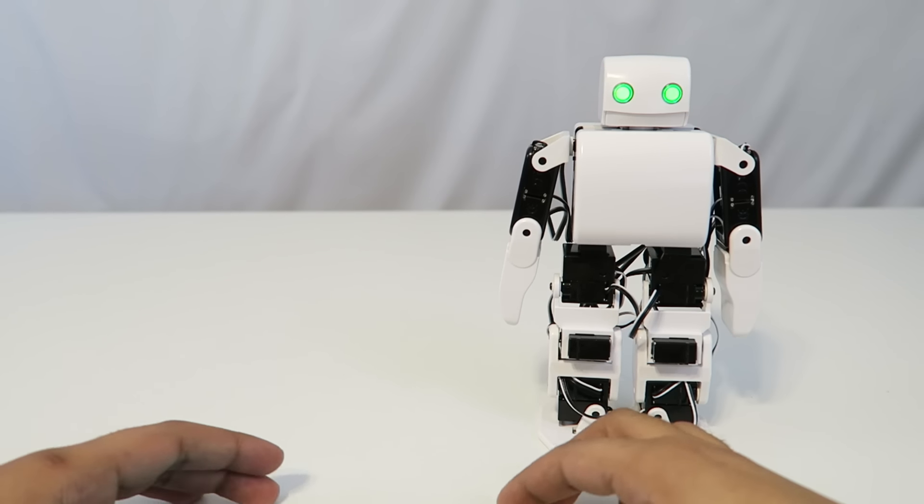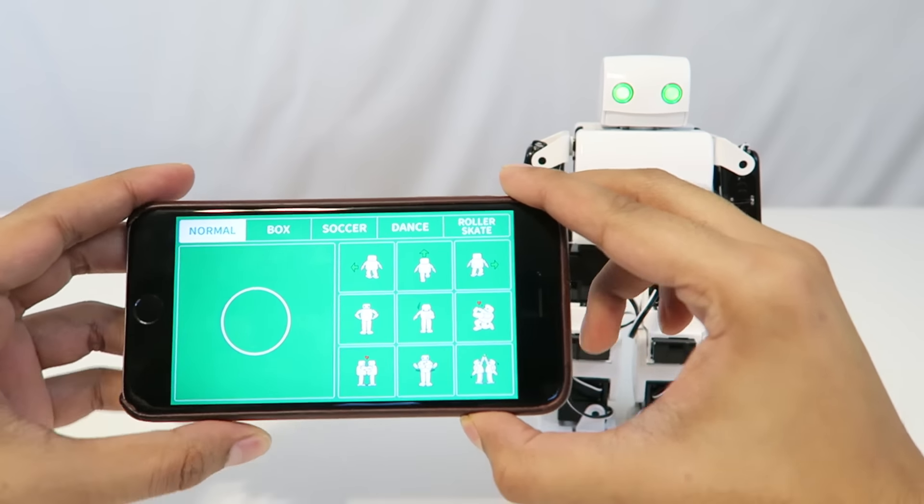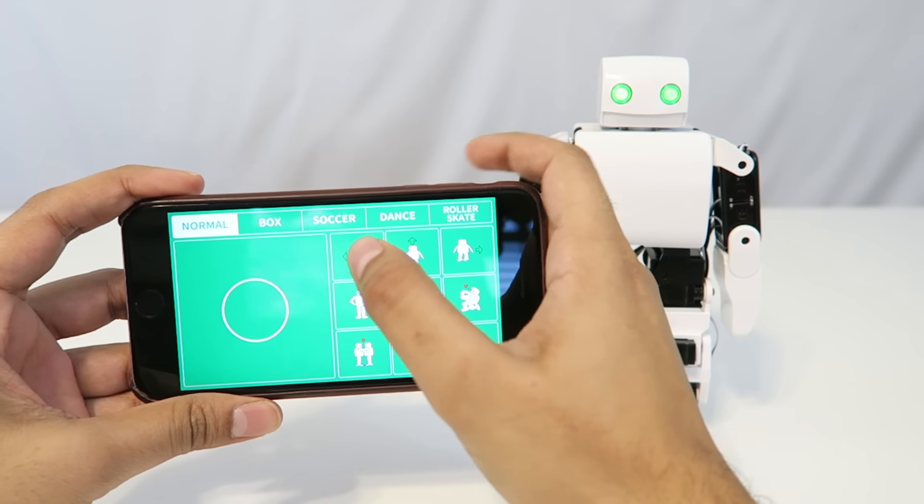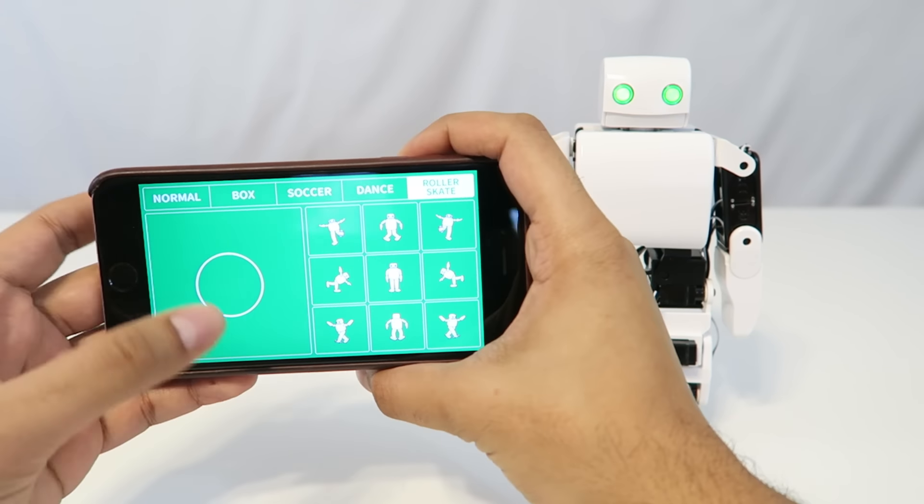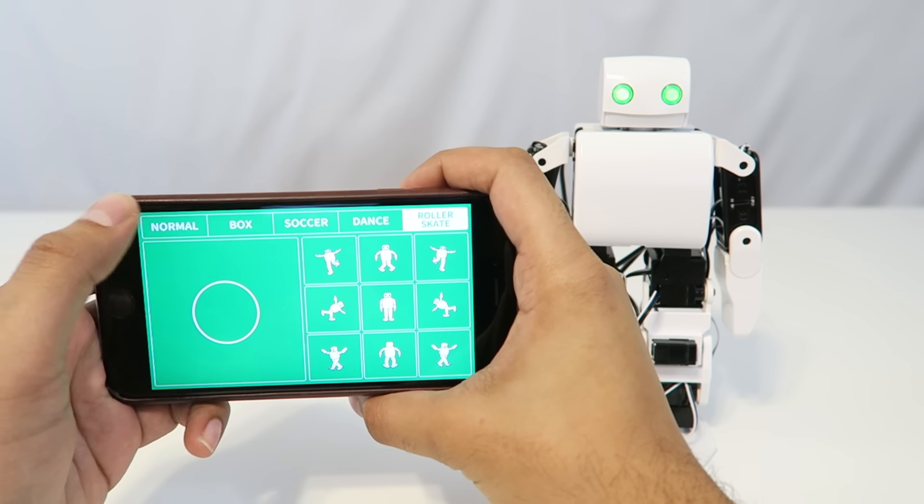Our robot is all set and ready to go. And here's the app itself. As you can tell, there's different modes on the top here. So there's a box mode, a soccer mode, dancing, as well as roller skating. So let's go ahead and take a look at the normal mode first.